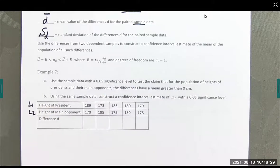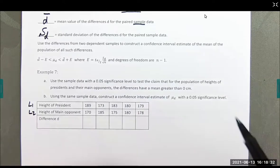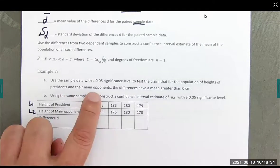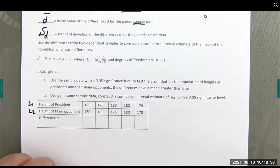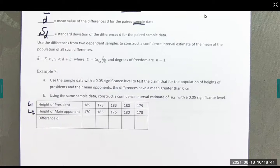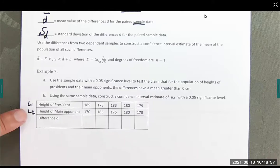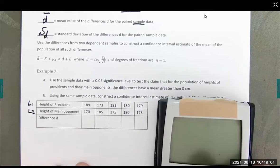And we're going to use the sample data to test the claim that the population of heights of presidents and their main opponents, the differences have a mean greater than zero centimeters. So, for example, comparing currently Joe Biden's height to that of Donald Trump's or in the previous election, would have been comparing Donald Trump's height to Hillary Clinton. And so height of the president and height of the main opponent. I've already put mine into list one and two.